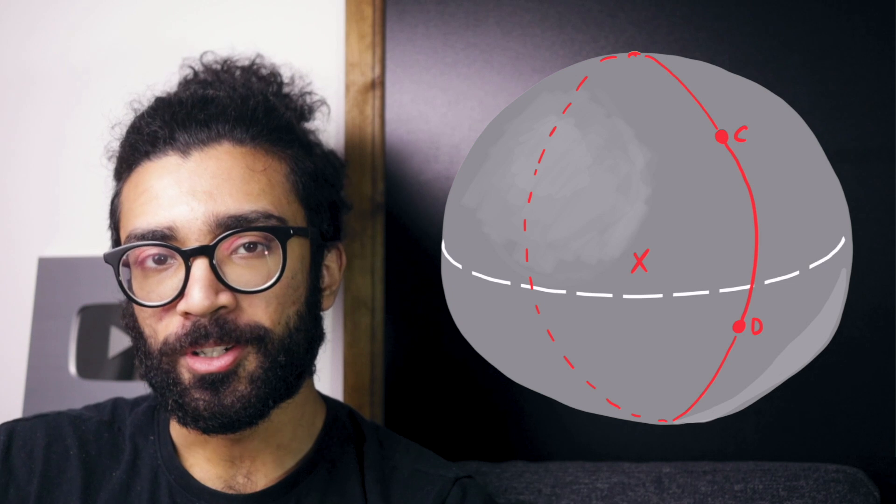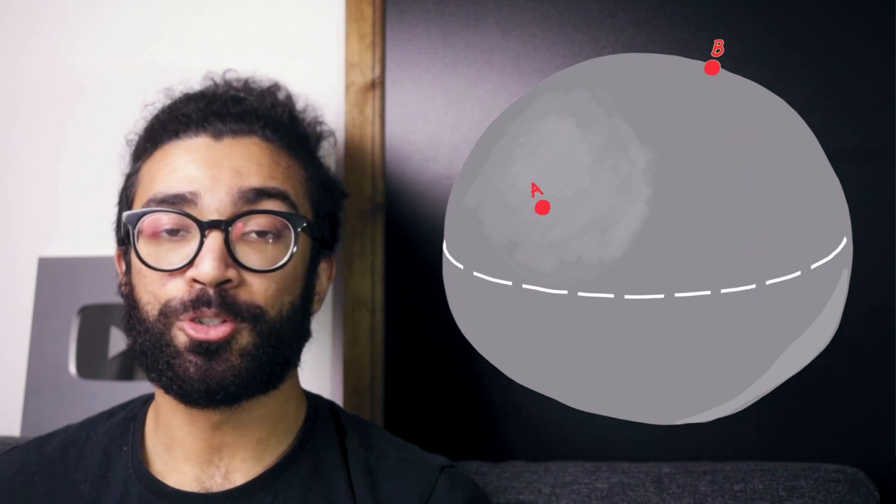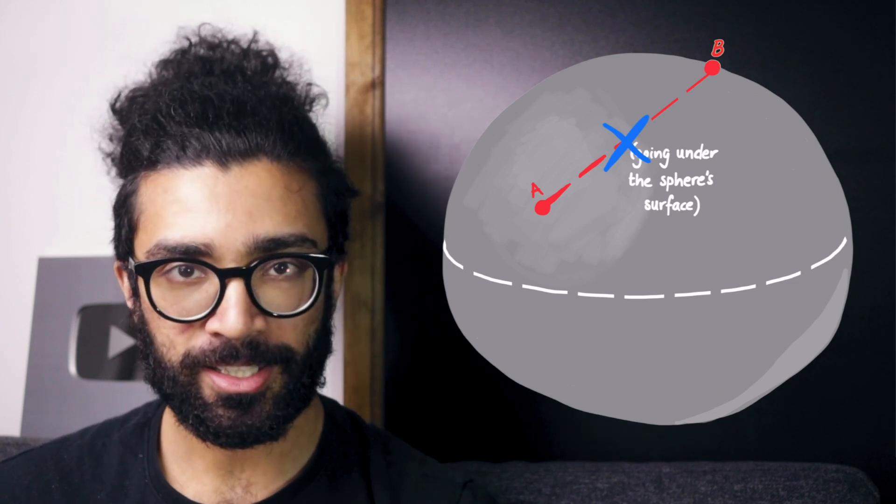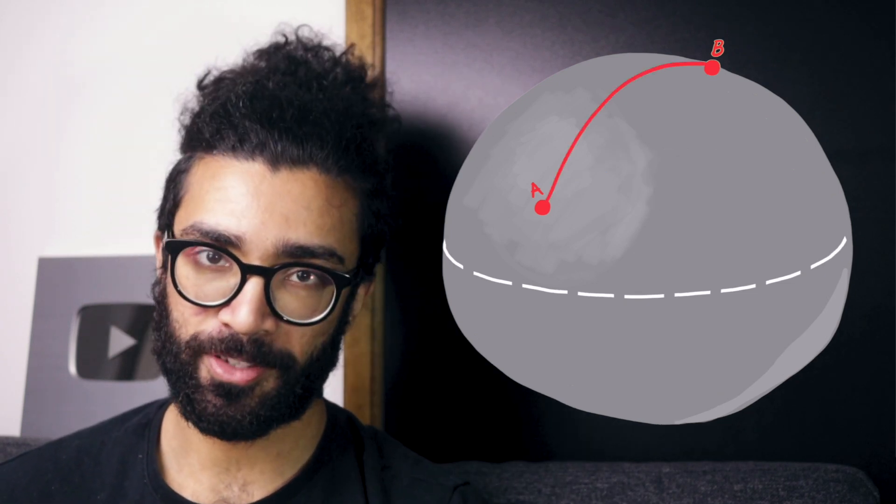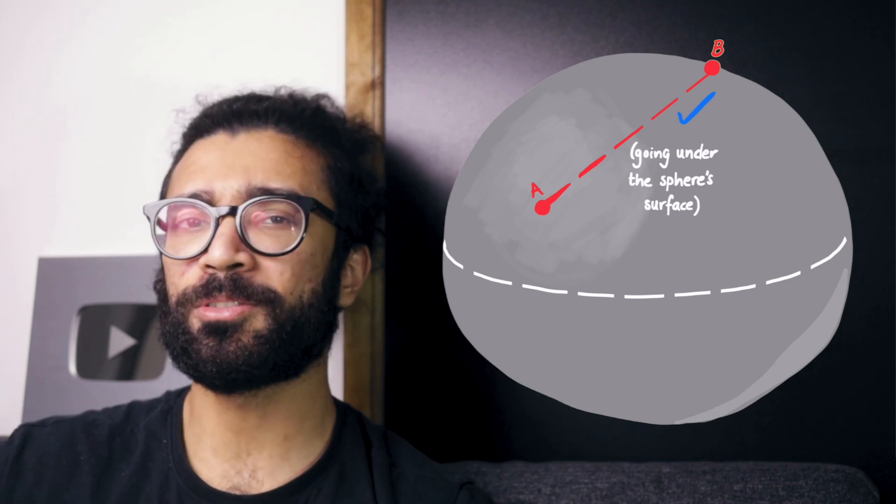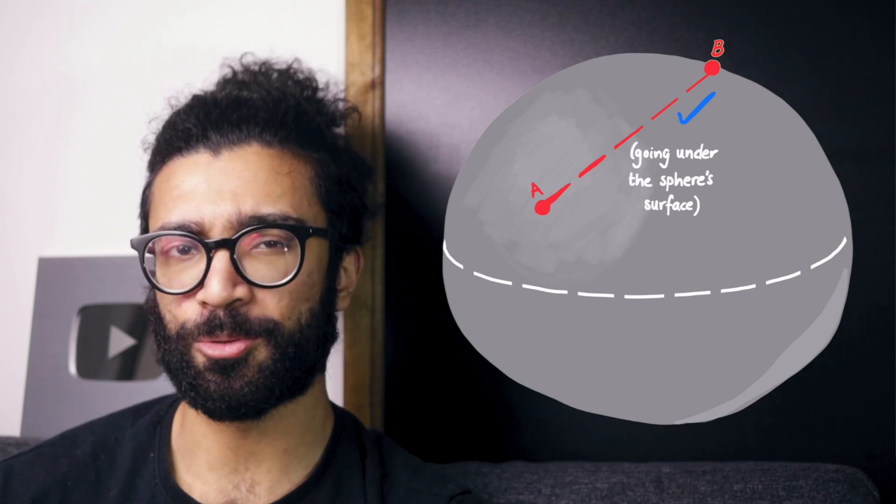Now this is all well and good, but the reason that the shortest distance between two points in a sphere is not a straight line is because we restricted ourselves to moving along the surface of the sphere. But if that restriction did not hold, then technically the shortest distance is still the straight line distance between those two points.